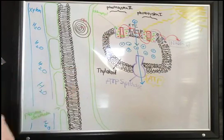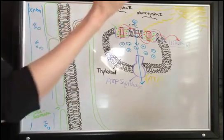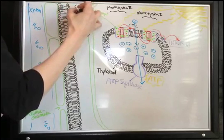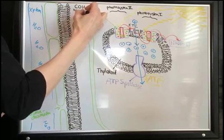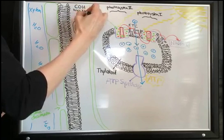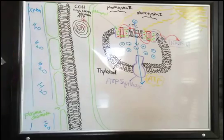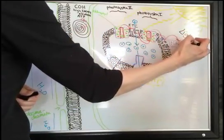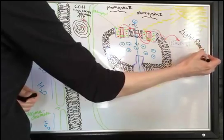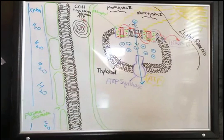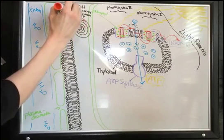To make a glucose molecule, we need the carbons, the oxygens, the hydrogens, high-energy electrons, and some ATP to run the whole system. We have successfully now, with this process — which we call the light reactions — created ATP and high-energy electrons using sunlight.